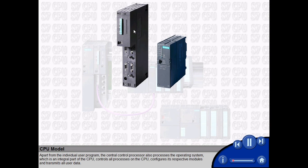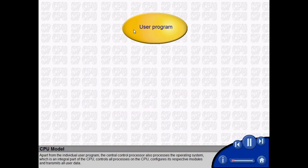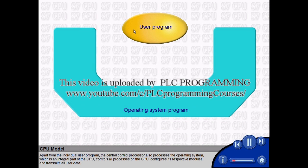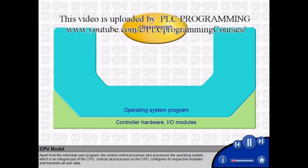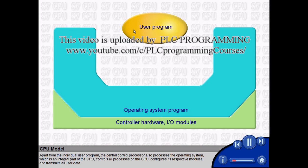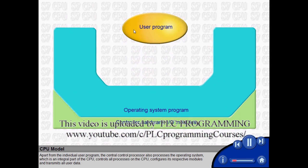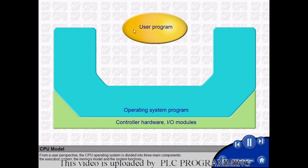Apart from the individual user program, the central control processor also processes the operating system, which is an integral part of the CPU, controls all processes on the CPU, configures its modules, and transmits all user data. From a user perspective, the CPU operating system is divided into three main components.